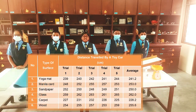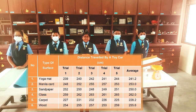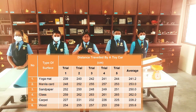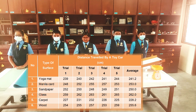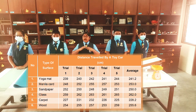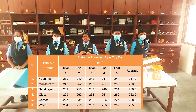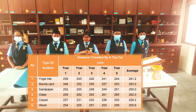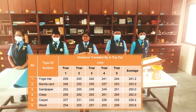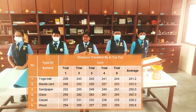According to our results, the distance traveled by the toy car varies according to the type of material. The surfaces are ordered from greatest to least distance traveled as: glass, wood, manila card, sandpaper, yoga mat, and carpet. The carpet, with a rougher surface, creates higher friction that slows down the movement of the car and reduces the distance traveled. While the glass surface, being smoother, creates lower friction and increases the distance traveled by the toy car.